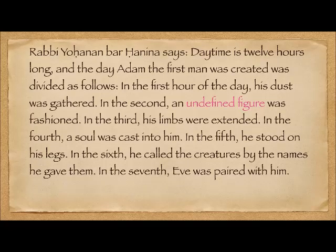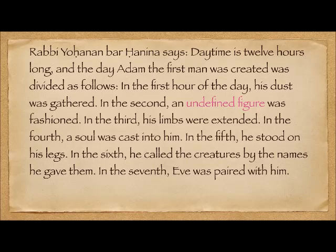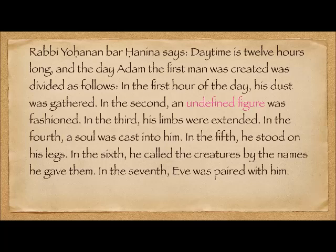The early use of the word Golem to mean 'shapeless mass' or 'something not yet perfectly formed' appears in the Talmud in Sanhedrin 38b. Rabbi Yochanan bar Chanina says: daytime is 12 hours long, and the day Adam the first man was created was divided as follows. In the first hour of the day, his dust was gathered. In the second, an undefined figure — a Golem — was fashioned.